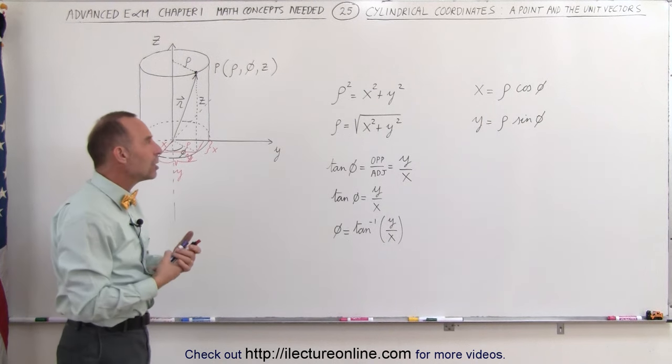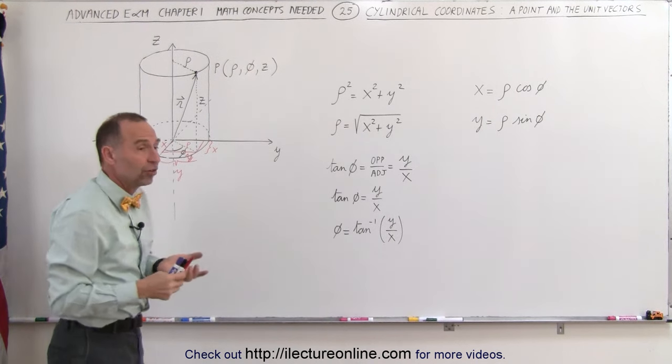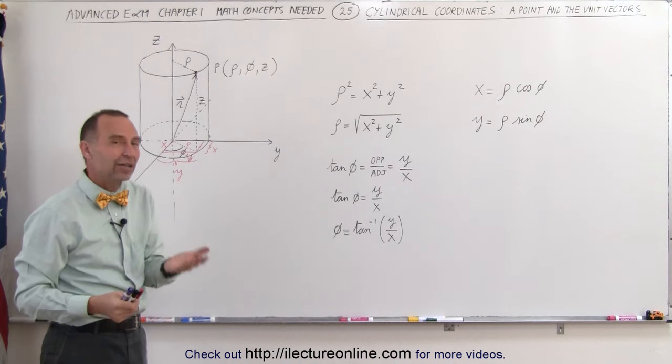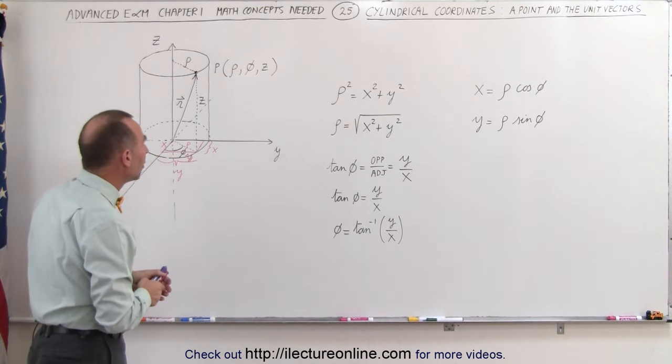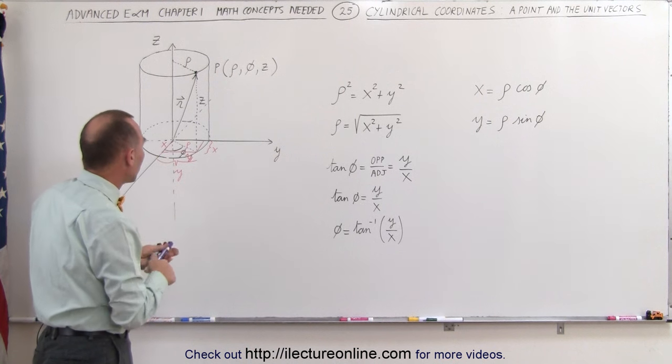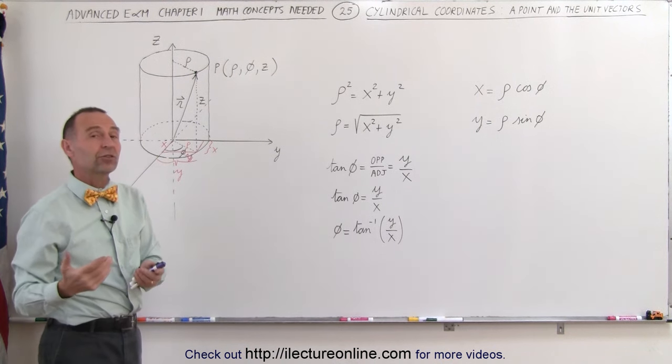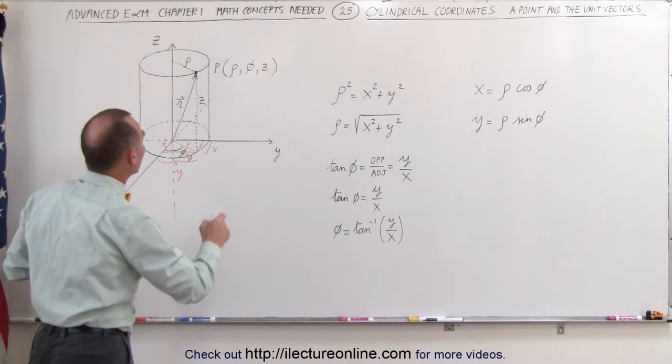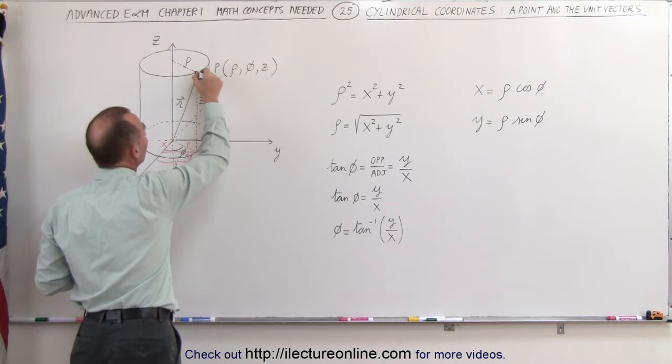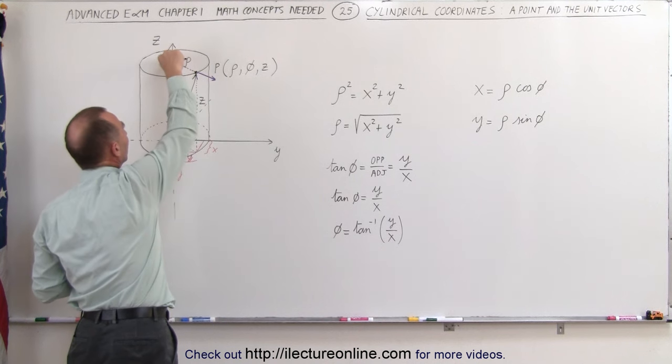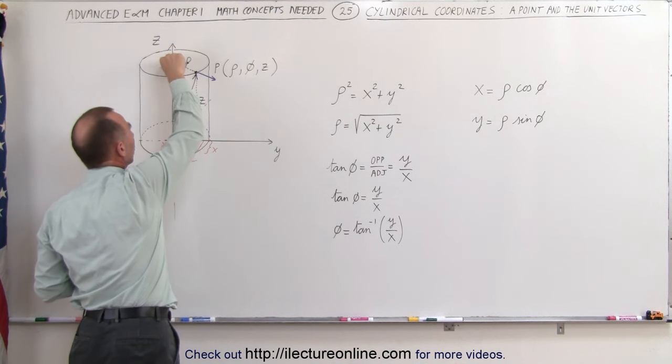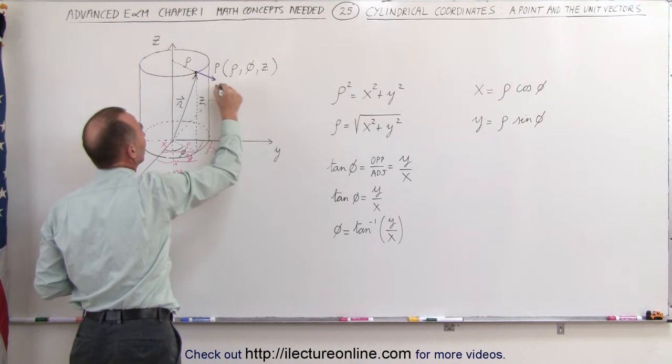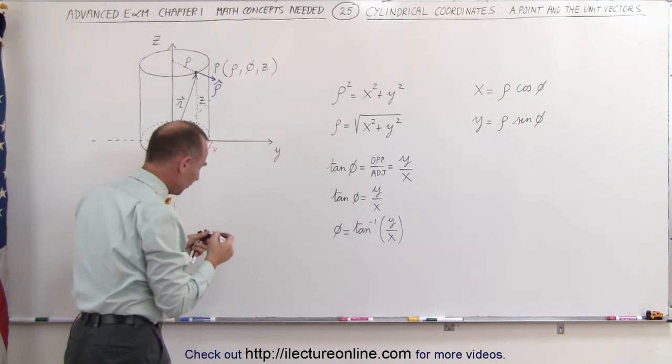Now we also want to talk about the unit vectors. The unit vectors in the Cartesian coordinate system are x hat, y hat, and z hat, or i, j, and k as we know it. So what are the unit vectors and what are the directions of the unit vectors in cylindrical coordinates? Well, first of all, the unit vector for rho is simply straight out in this direction. So again, it goes from the z-axis to the point, and then we draw a unit vector in this direction, and this is then known as the rho unit vector.